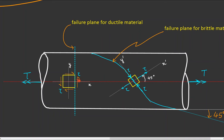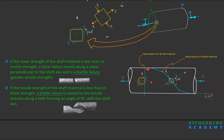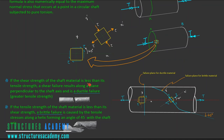We say ductile materials because in such cases the shear strength is lower than the tensile strength; since the tensile strength is higher, the material is ductile in nature. If the shear strength of the material is higher than the tensile strength, failure occurs due to tensile failure, in which case the tensile stresses cause failure along a helical path — this defines the failure plane for brittle materials. We call this brittle failure because failure occurs in the tensile mode, meaning the tensile strength is lower and the material is brittle.